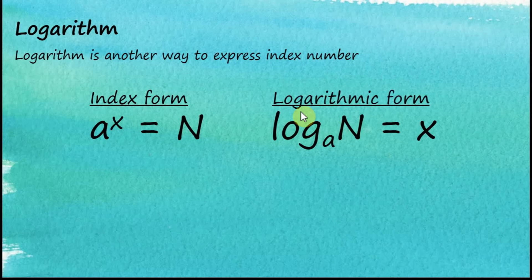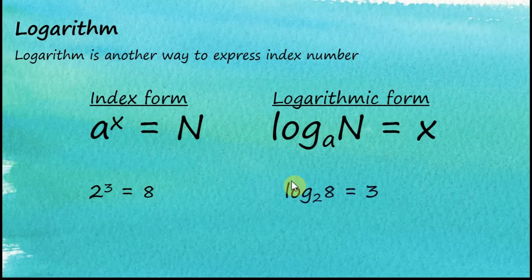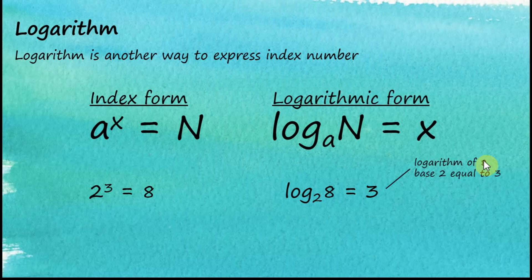For example, we know that 2 to the power of 3 equals 8. Another way to write this is by using the logarithmic form: log base 2 of 8 equals 3. We say the logarithm of 8 base 2 is equal to 3.